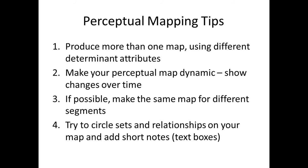A couple of tips to consider when making a perceptual map. First, I would always suggest you make more than one map — you usually have access to different determinate attributes, and producing more than one map will give you a different sense of the market. As I've shown with the change over time, make your perceptual map dynamic to show how positioning shifts across years. If possible, if you have the data, produce the same map with the same determinate attributes but for different segments or target markets, because they're likely to have different perceptions of the brands. And as I've done, add little notes along the way. If you're doing this for an assignment or business report, try to interpret the map — don't just produce it and say 'there it is.' Add circles, arrows, and short notes using text boxes.